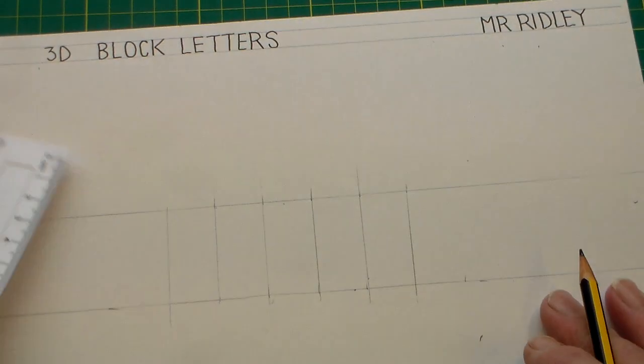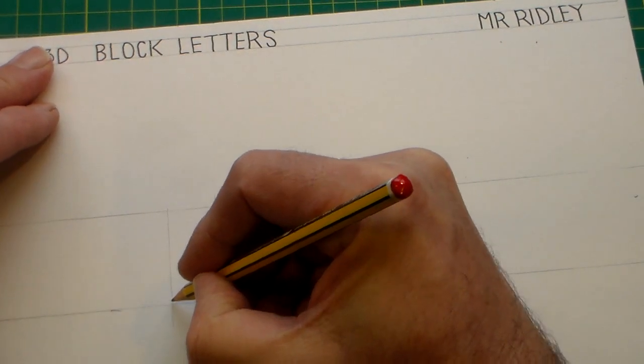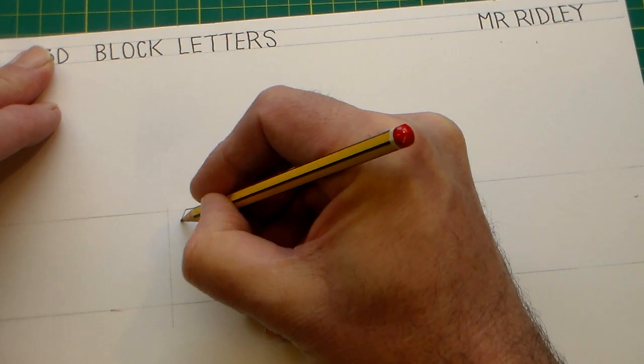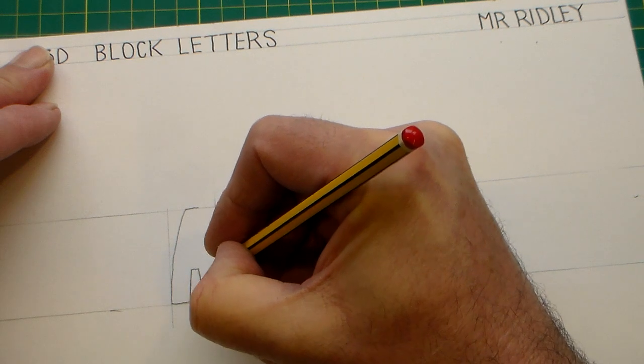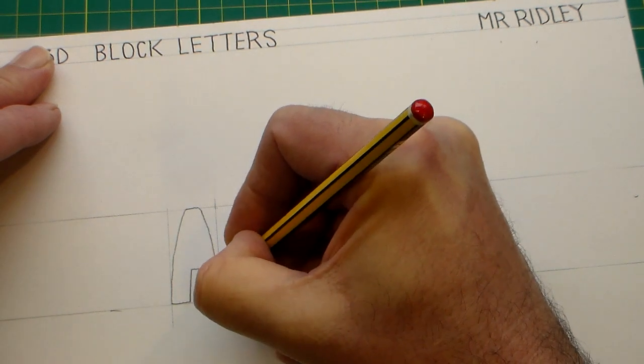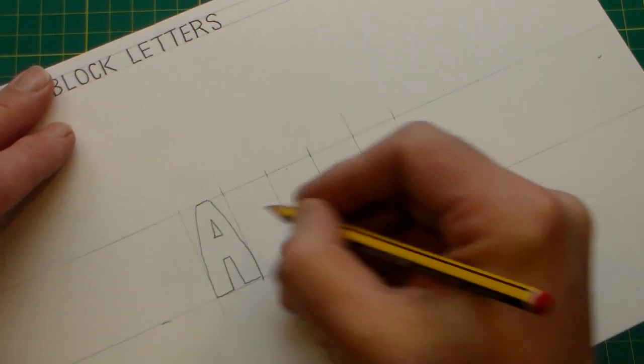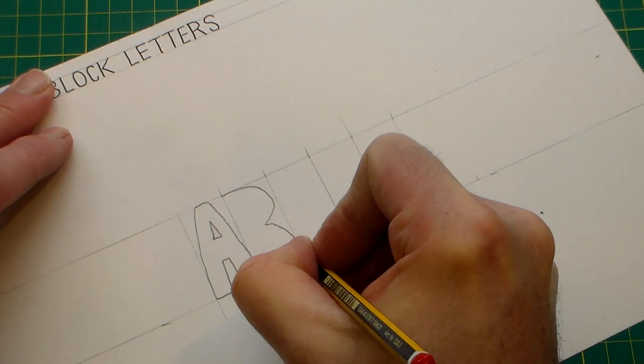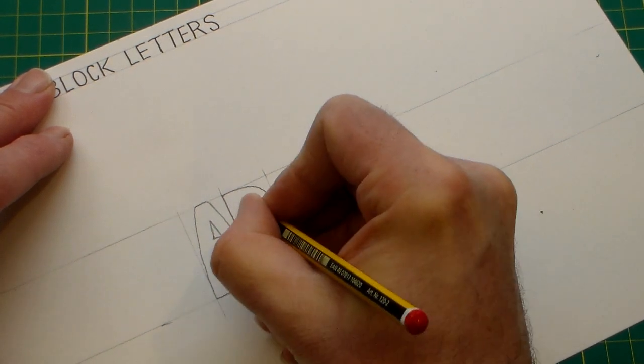So once you've created the spacing for our letters, we can then add our letters. Just like before when we did the plain block lettering, make sure we've taken the trouble to draw a box. Make sure that each letter we draw fills the box entirely. There's no point in drawing your box to put the letter in and then not using the whole of the box.